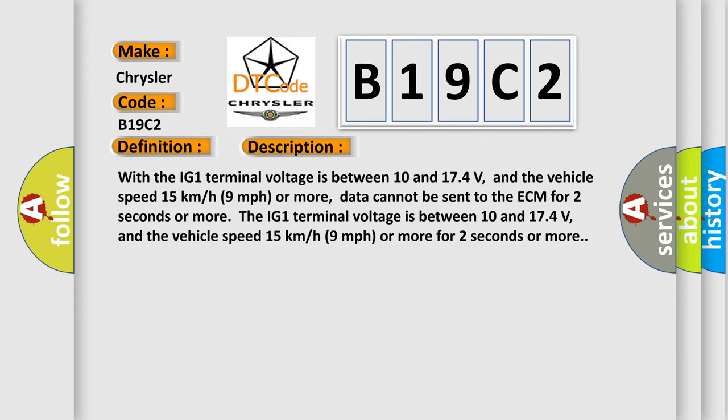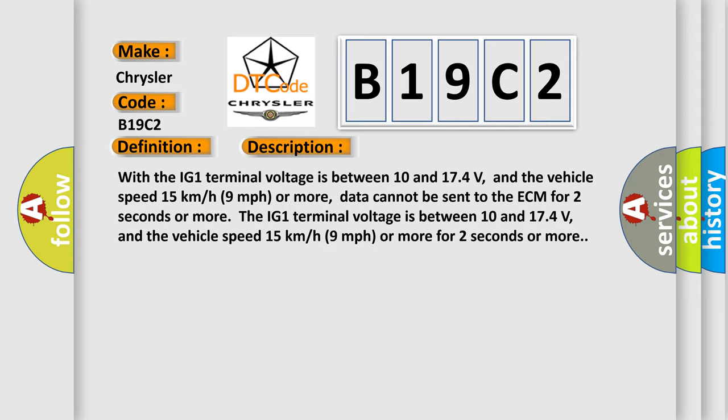The IG1 terminal voltage is between 10 and 17.4 volts, and the vehicle speed 15 km/h or 9 mph or more for 2 seconds or more. This diagnostic error occurs most often in CAN communication system cases.